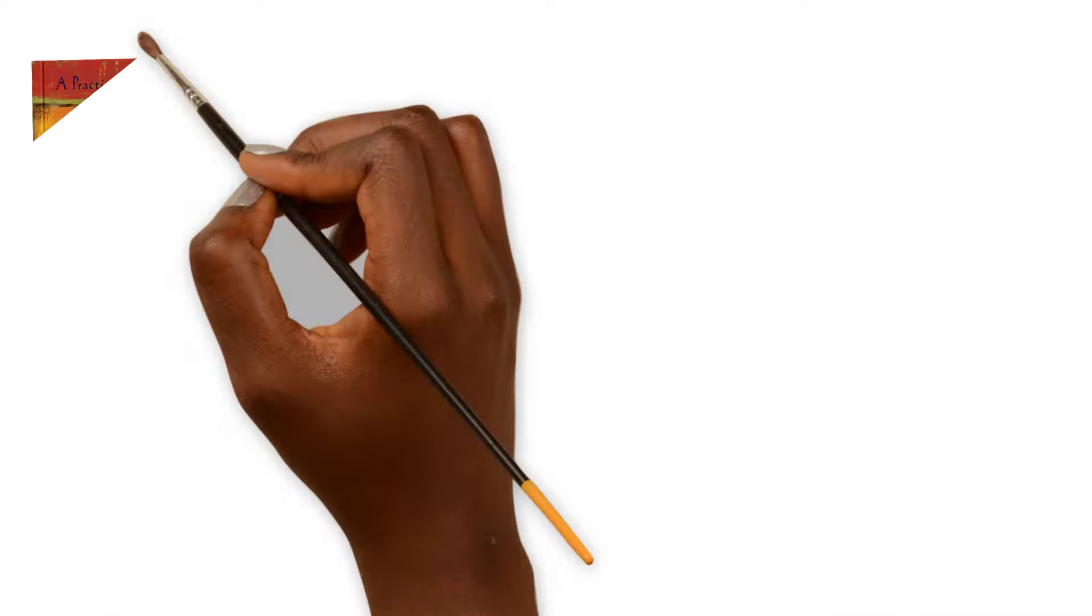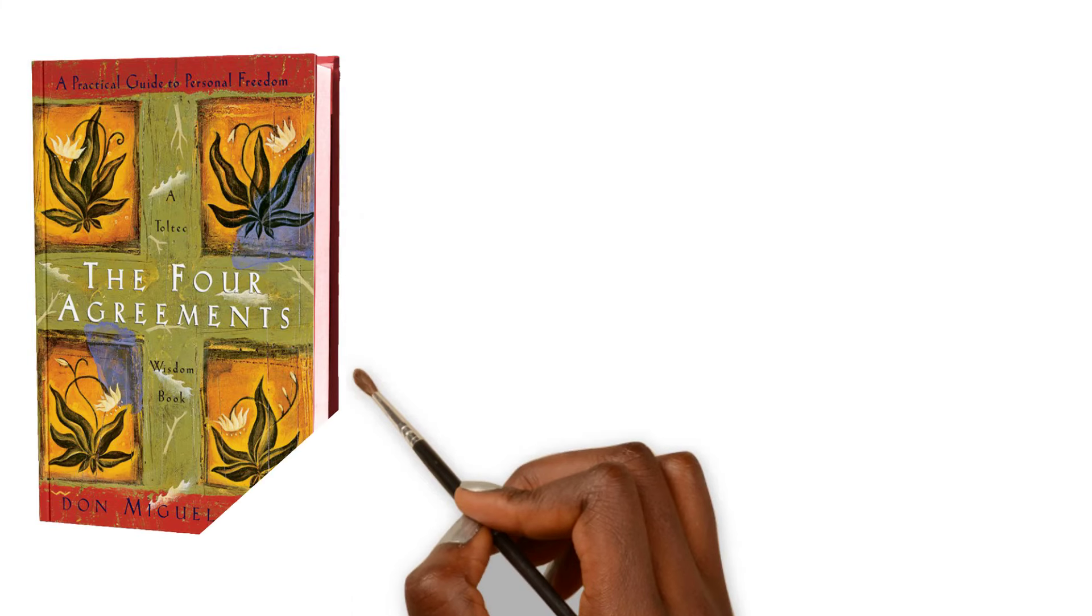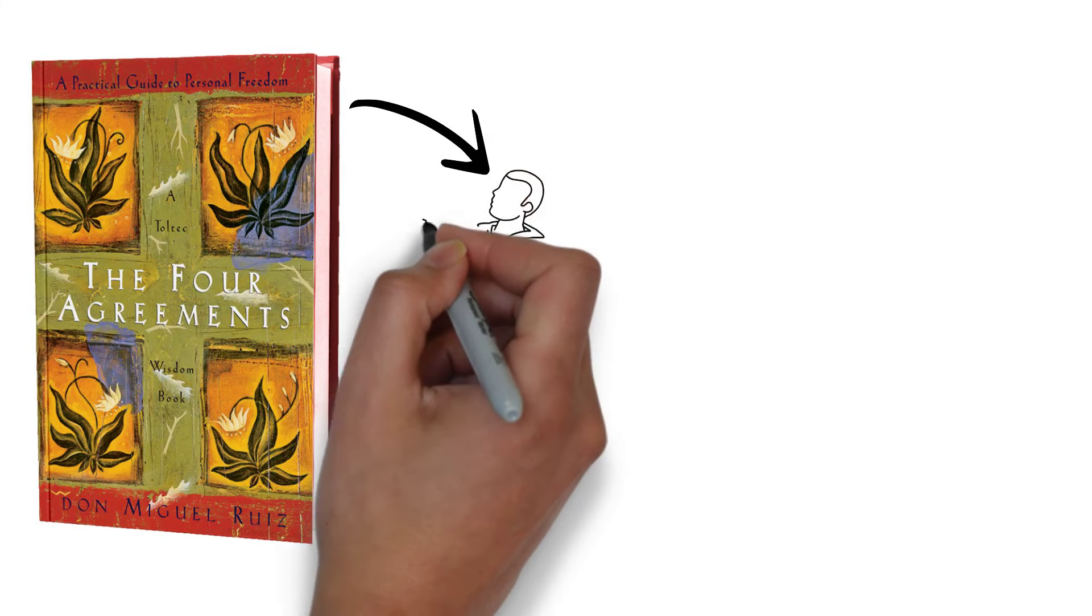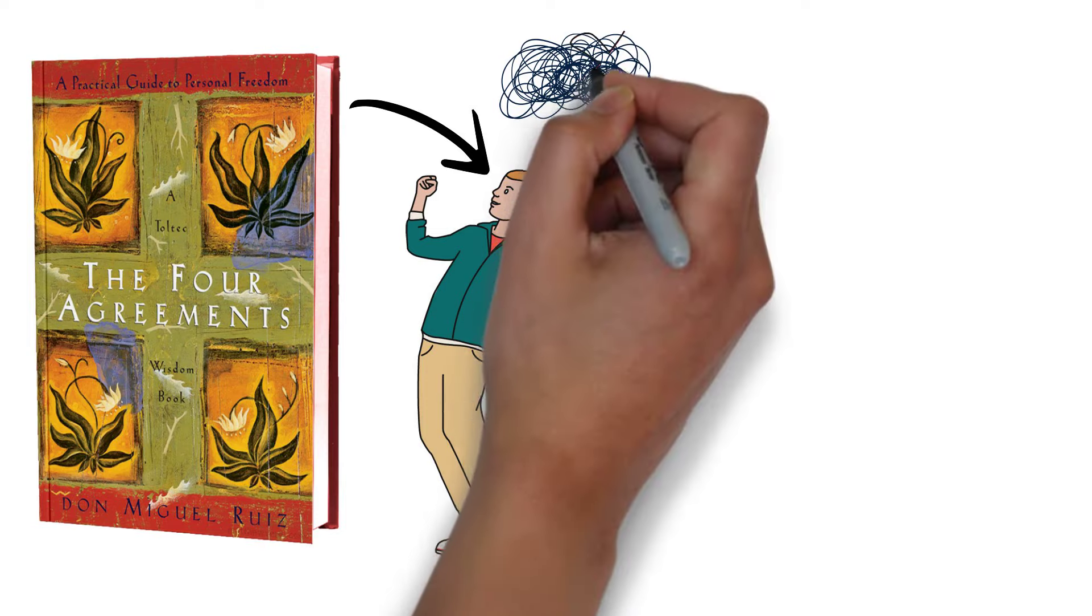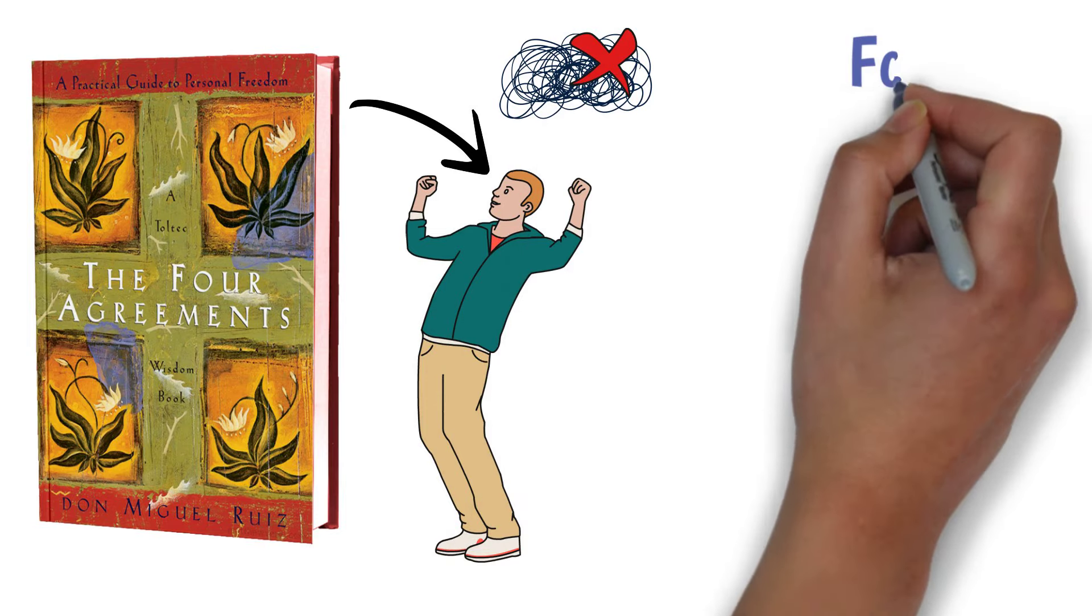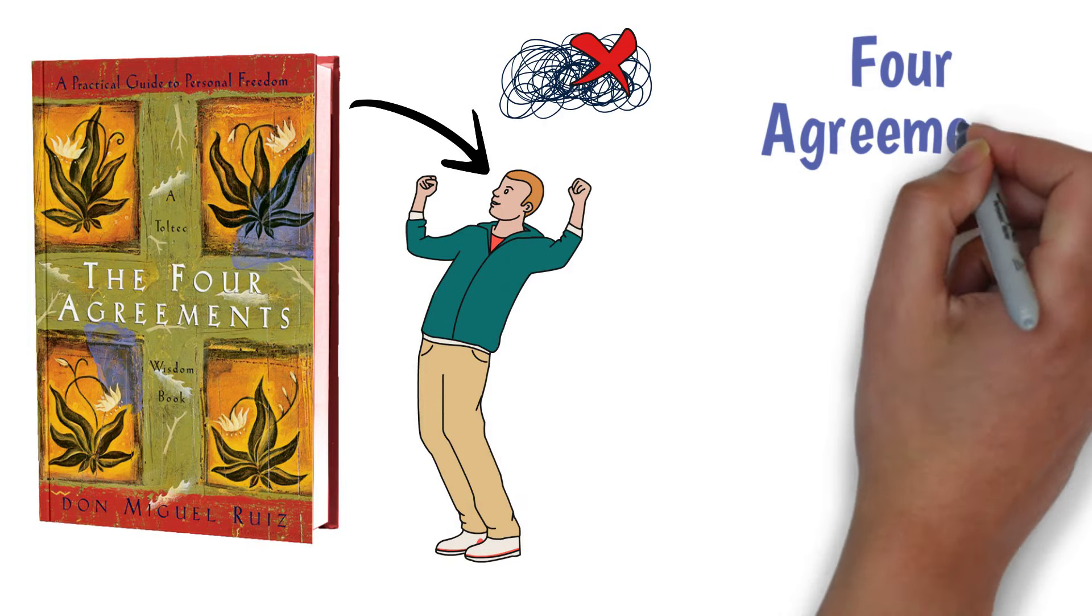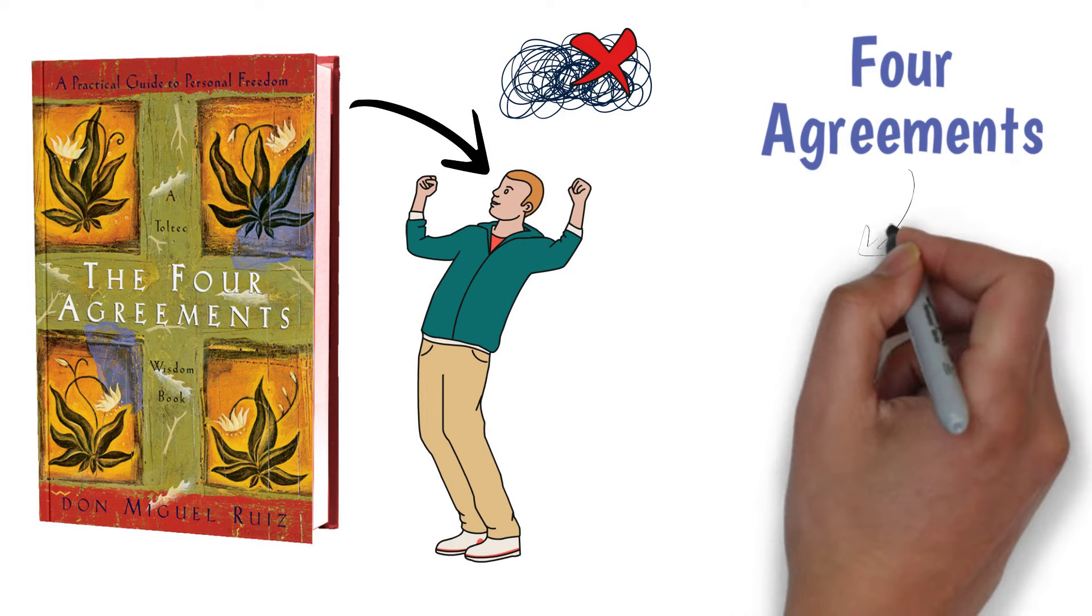The Four Agreements, written by Don Miguel, offers a solution. This book is truly a guide for freedom and happiness. It emphasizes that you should stop holding on to your negative and limiting beliefs. Instead, it offers you four life-changing agreements to live by.